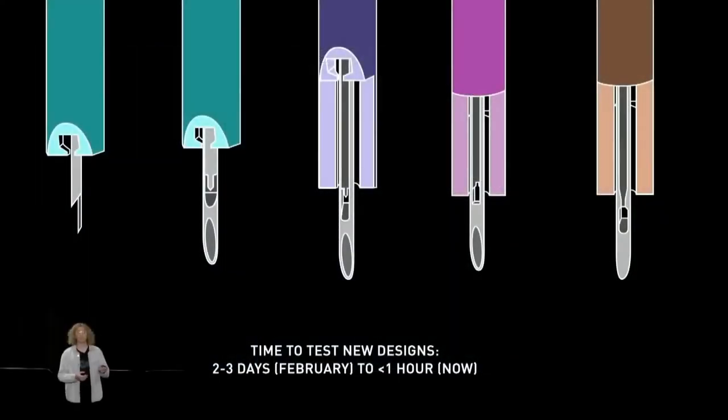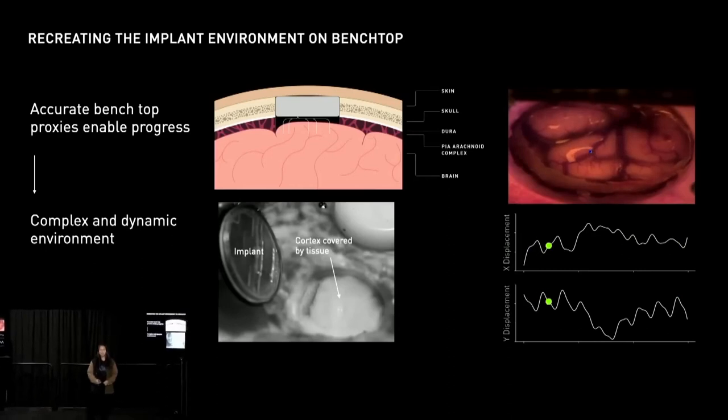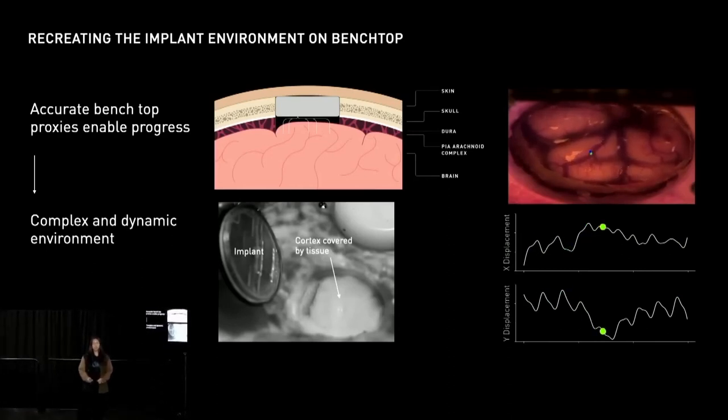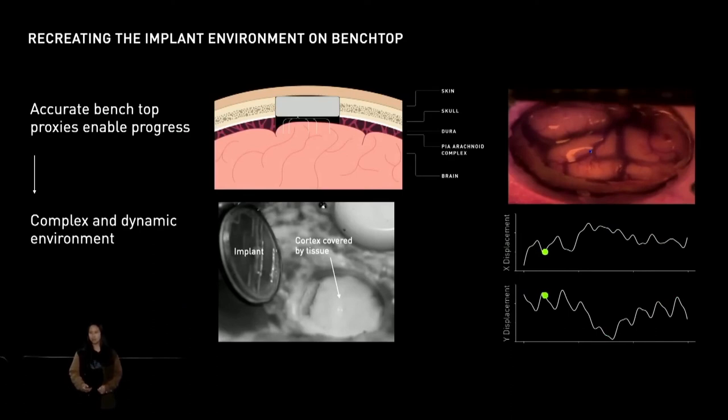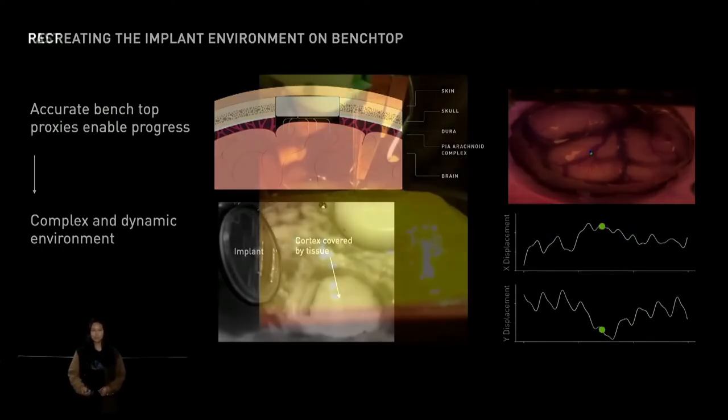This allows us to iterate in under an hour for new designs. The latest design, seen on the right, can actually insert through nine layers of dura totaling three millimeters on the benchtop. This is far more than we could ever expect in a human with significant margin. We're developing synthetic materials that mimic the biological environment. This allows us to learn as much as we can on benchtop and start taking steps away from the industry standard of animal testing. Developing accurate proxies, though, is challenging.